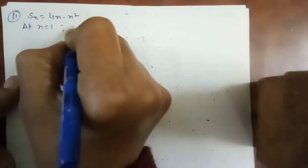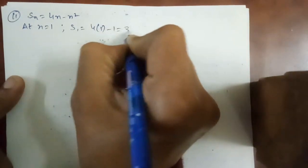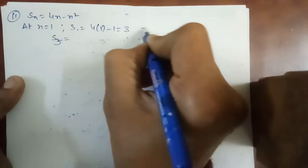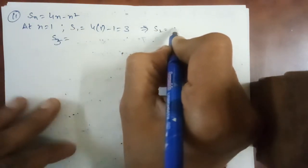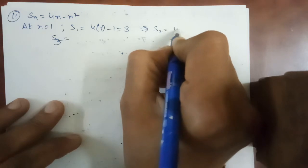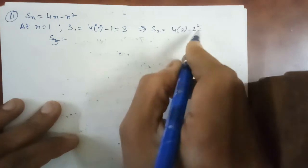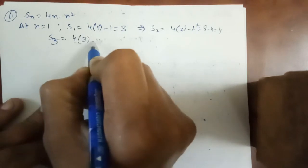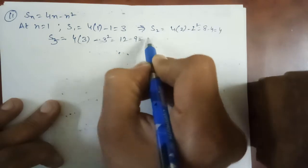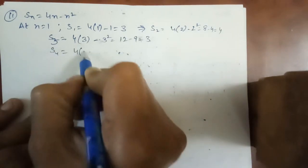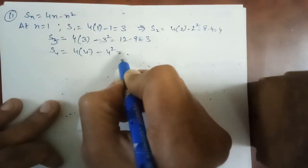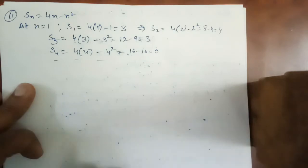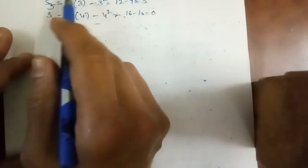Here S1 is equal to 4n minus n square. At n equals 1, S1 will be 4 into 1 minus 1, that is 3. S2 will be 4 into 2 minus 4, that is 4. S3 will be 4 into 3 minus 9, that is 3. S4 is 4 into 4 minus 16, that is 0. These are the sum of all terms.